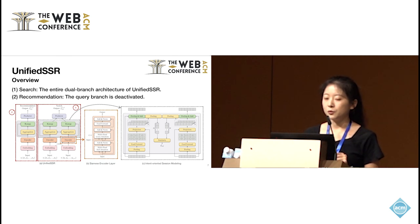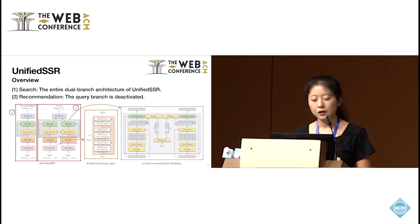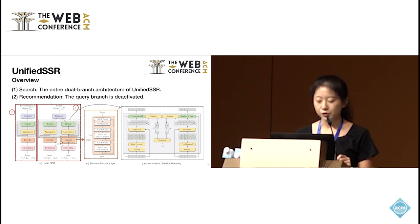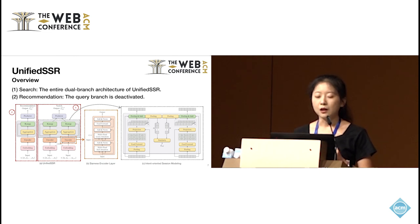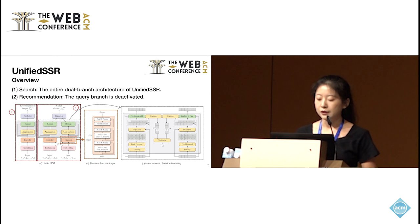Here is the overview of our proposed model. The entire dual branch architecture is shown on the right side of sub-figure A. There are two inputs: the product sequence and the query sequence. This dual branch architecture can be adapted to the recommendation scenario by deactivating the query branch. Sub-figures B and C show the details of the encoder and the proposed intent-oriented session modeling.